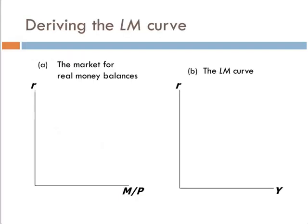Let's derive this mathematically. I've lined up my axes just like I did when I derived the IS curve. In slot A on the left, I've got the market for real balances. Slot B is for the LM curve. Notice that the vertical axes are both real interest rates — that's why we line them up side by side, because it's the vertical axis that's the same.